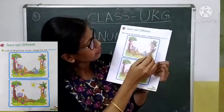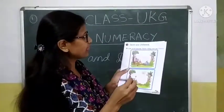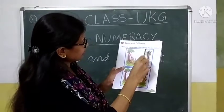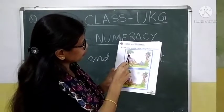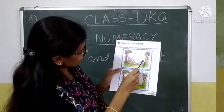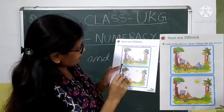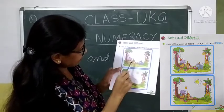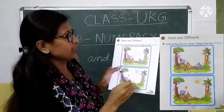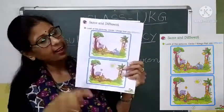How many did we get? Let's count. Count children. One, two, three, four, five, six, and seven. So we got seven different.